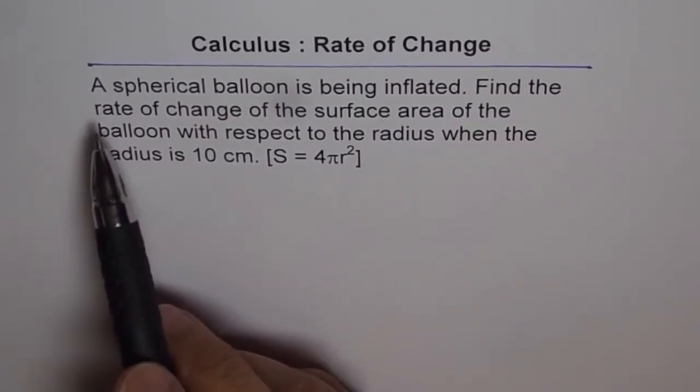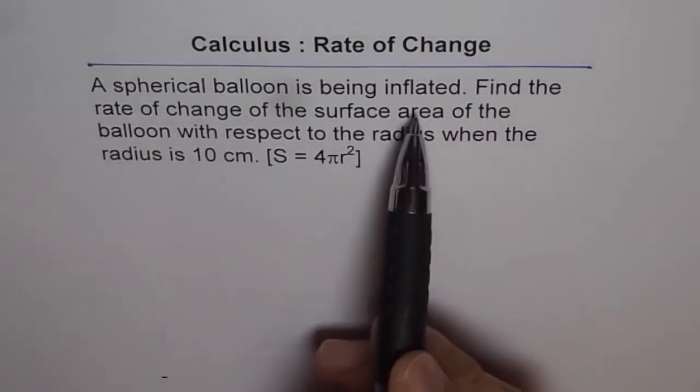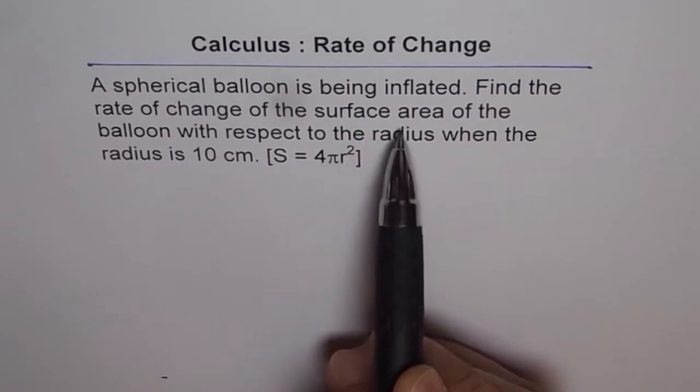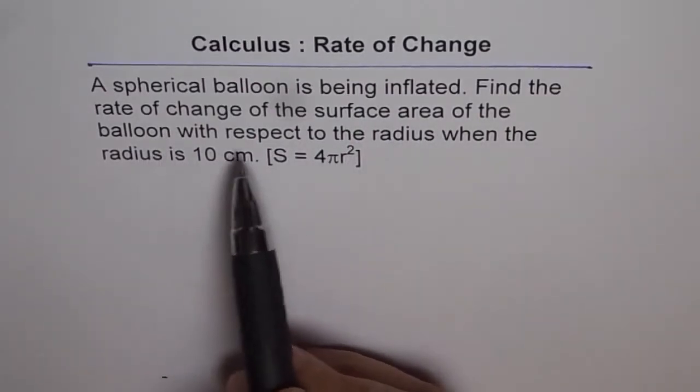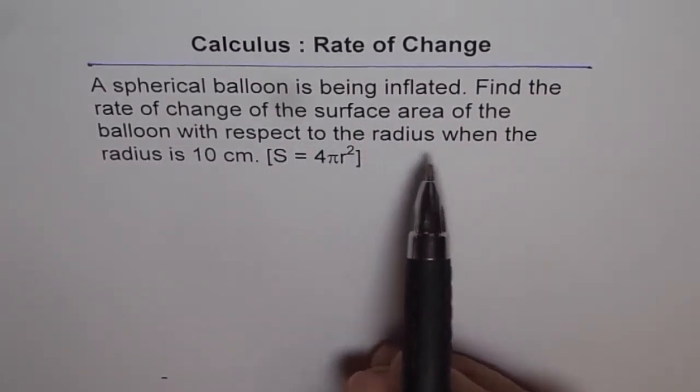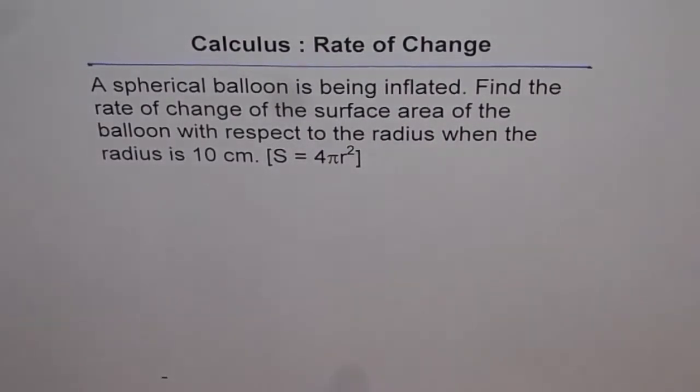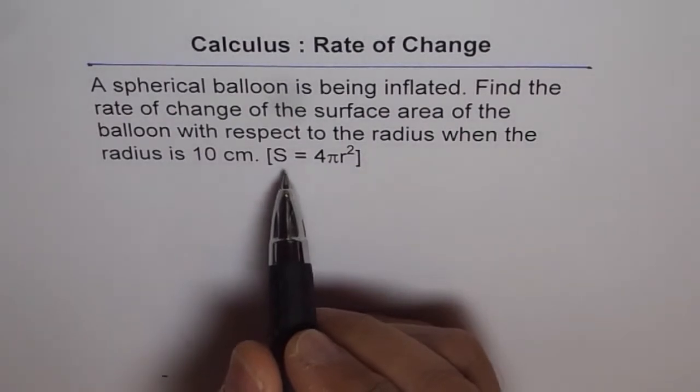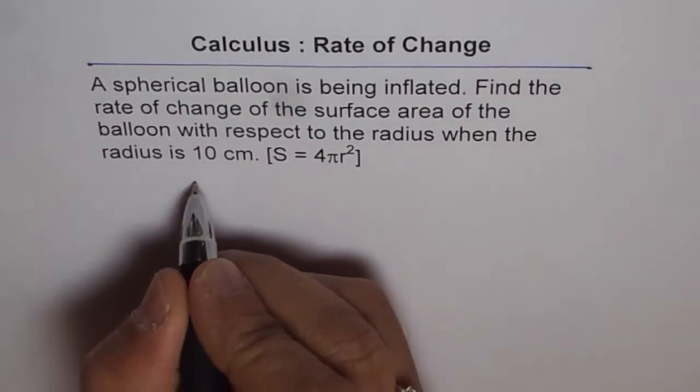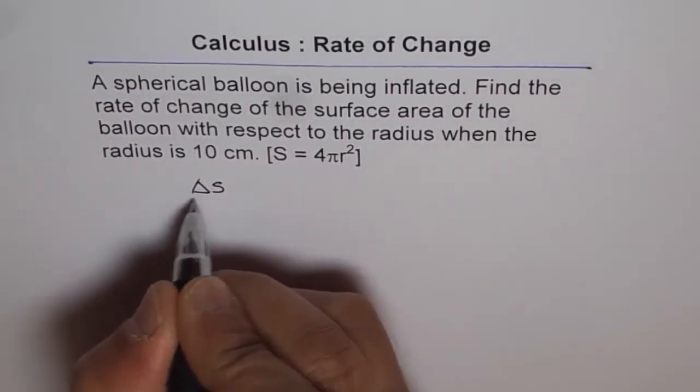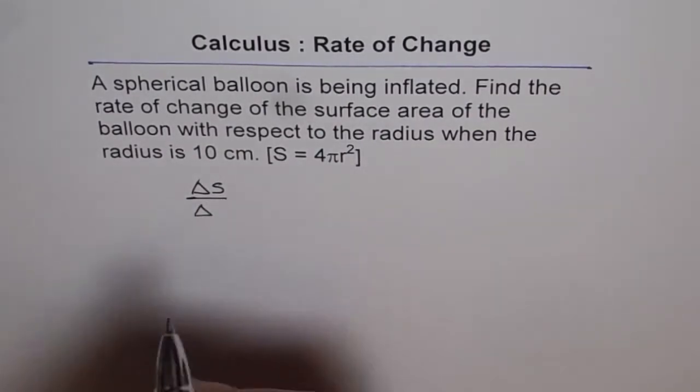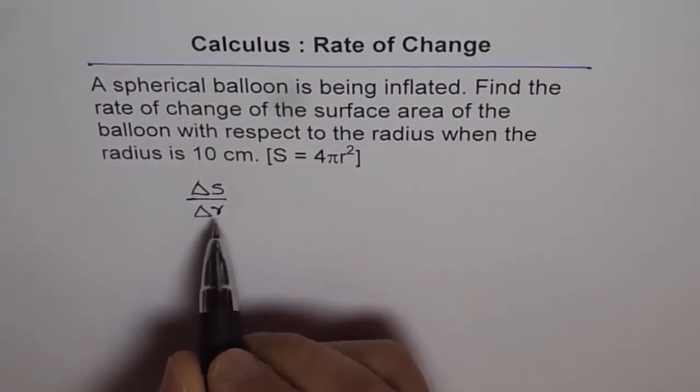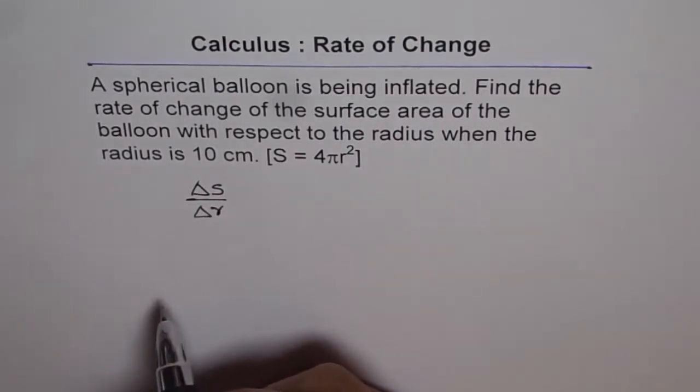The question here is, a spherical balloon is being inflated. Find the rate of change of the surface area of the balloon with respect to the radius when the radius is 10 cm. So, rate of change of surface area with respect to radius means this is surface area change divided by the radius. The independent variable is r and surface area depends on this r.